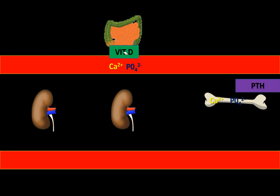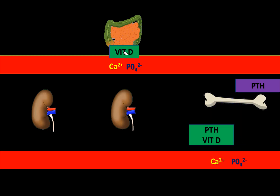Bone formation is usually inhibited by parathyroid hormone, helping retain calcium and phosphate in the blood. Parathyroid hormone together with vitamin D increases osteoclast activity, causing bone resorption and releasing calcium and phosphate into the blood. This process is inhibited by calcitonin, which prevents bone resorption and inhibits osteoclast activity.